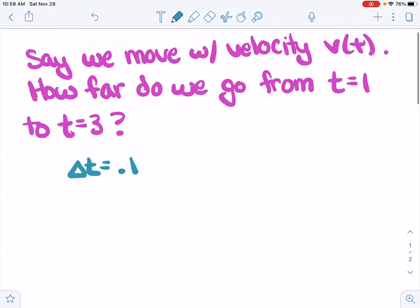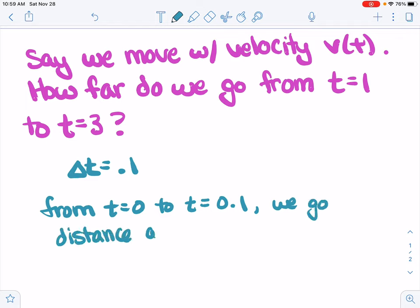And let's say that from time equals 0 to time equals 0.1, we go a distance approximately. Distance equals rate times time. So the velocity at time 0 times the time interval. So from 0 to 0.1, we go about this far. That is distance equals rate times time that we've used there.